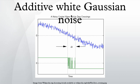AWGN is often used as a channel model in which the only impairment to communication is a linear addition of wideband or white noise with a constant spectral density and a Gaussian distribution of amplitude.